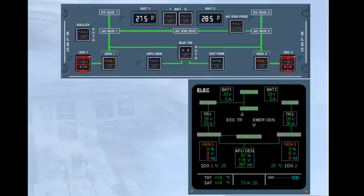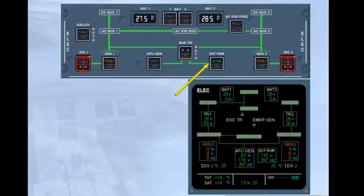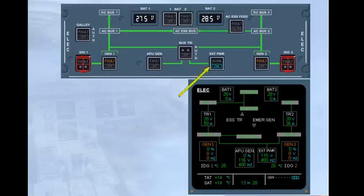For training purposes, we will assume that the aircraft is to be completely shut down, so you have to request an external power source. Click on the mechanic. The avail light on the panel and the external power indications on the e-cam have appeared, indicating that the external power source is plugged in and available. Select external power on. The on light is illuminated in the external power push-button switch, and the green lines to AC bus 1 and 2 indicate that external power has taken over from the APU.